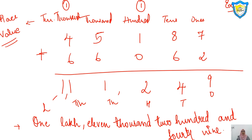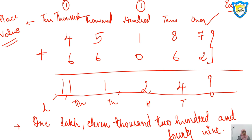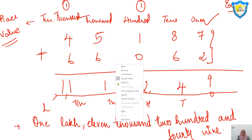So this will be the pattern for writing the sums. First write the place value. Then write the numbers. Then write the total and calculate it — that is, 1,11,249 or whatever the answer is. This will be your pattern to solve the sum.